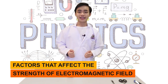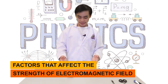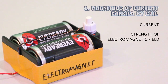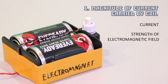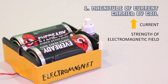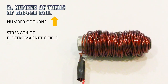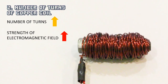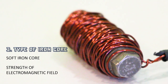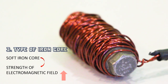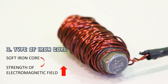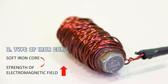What are the factors that affect the strength of an electromagnetic field? First, the magnitude of current carried by the coil — the higher the current, the higher the strength of the electromagnetic field. Second, number of turns — the greater the number of turns, the greater the strength. Third, the type of iron core — a soft iron core will help concentrate the magnetic field to produce a stronger field.